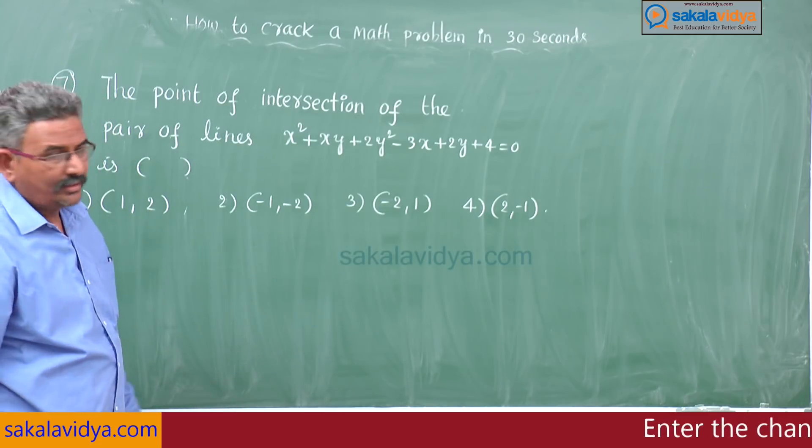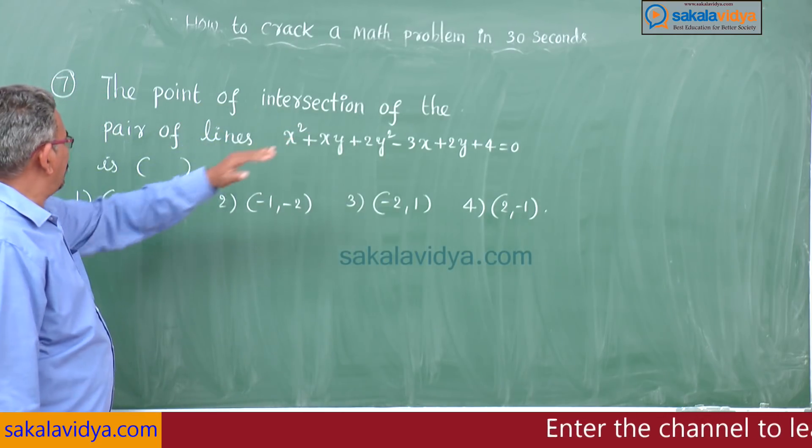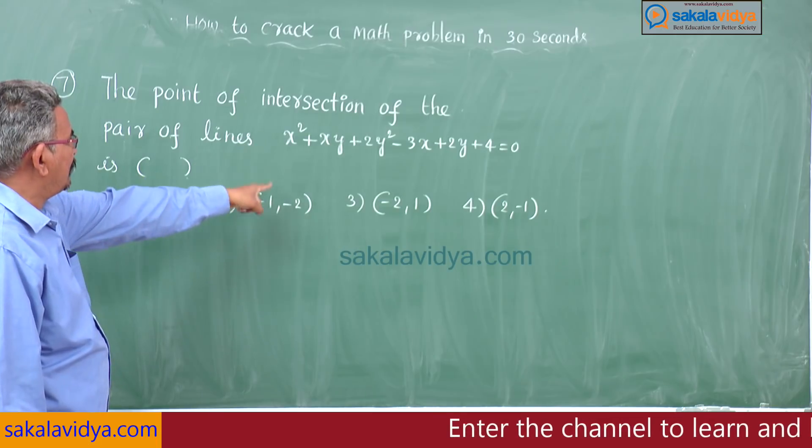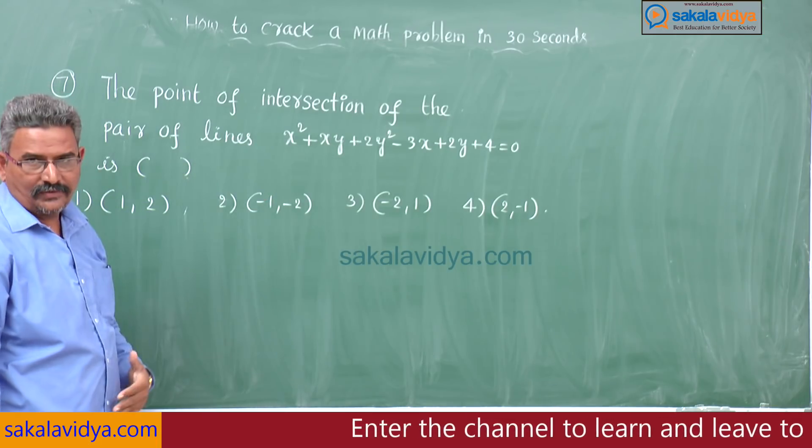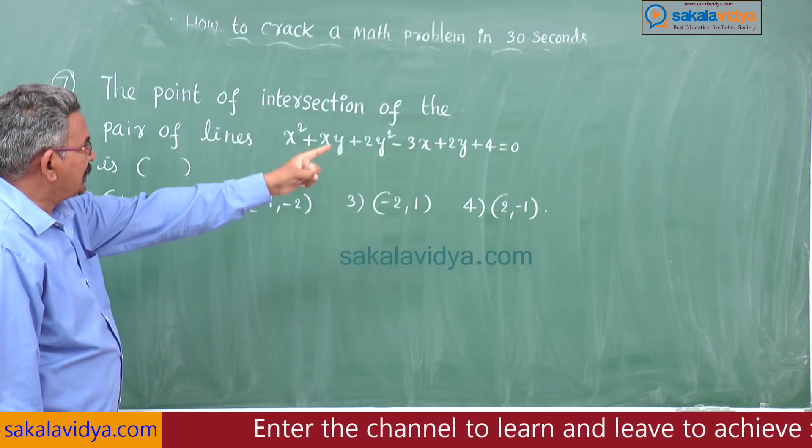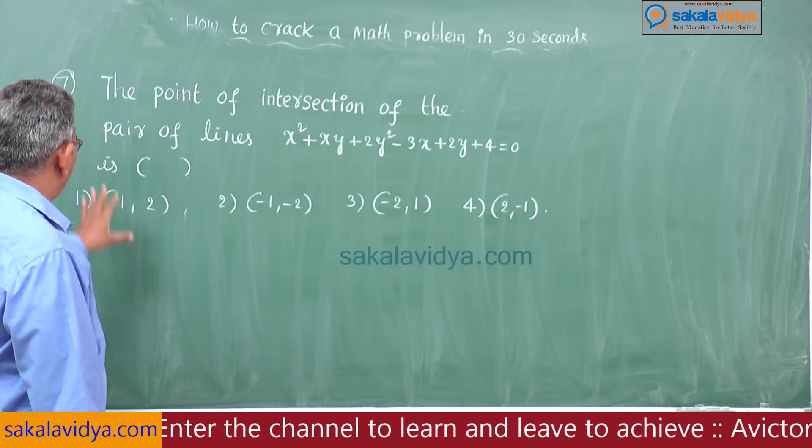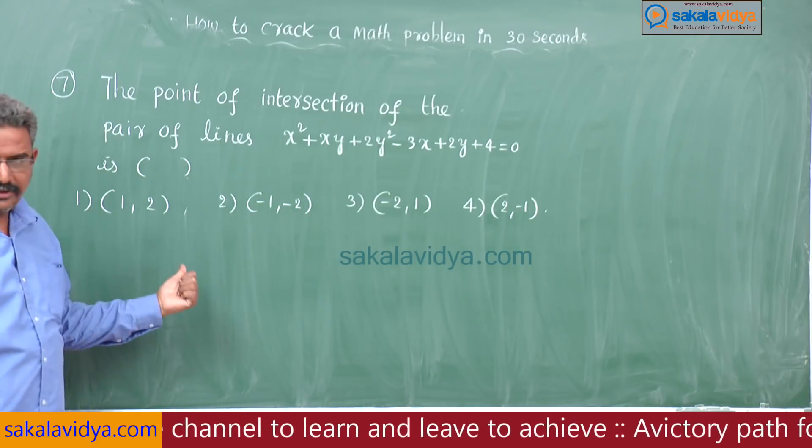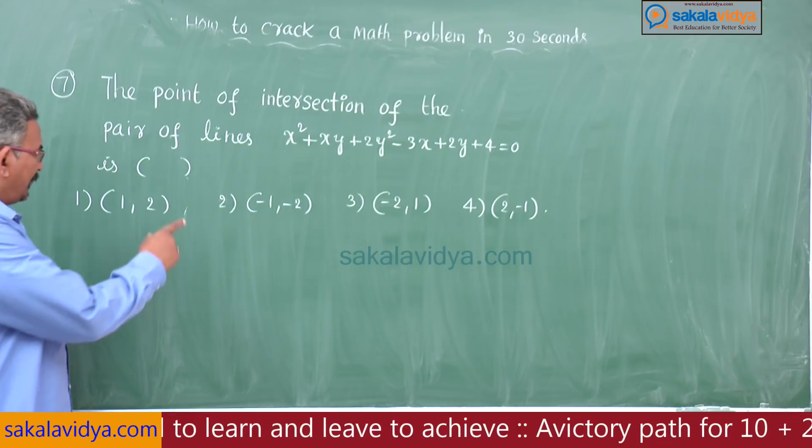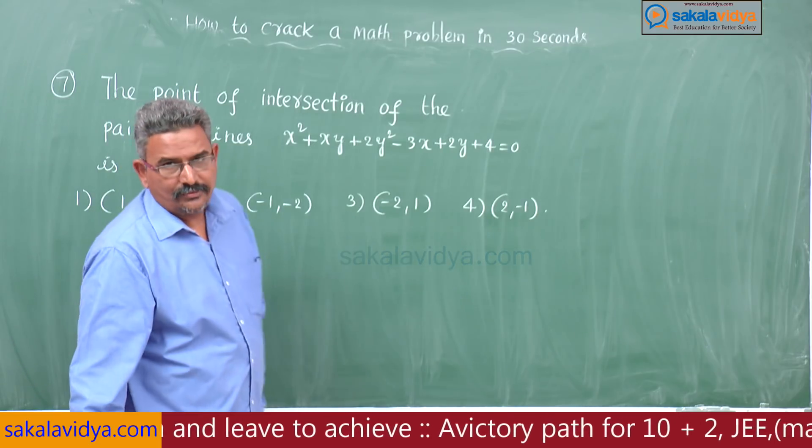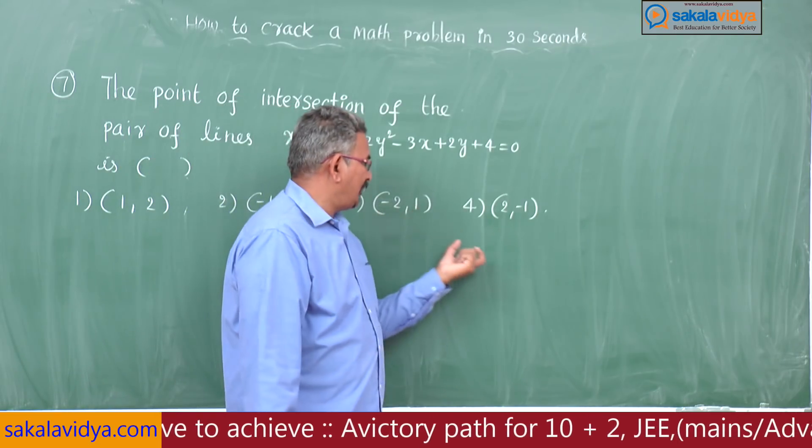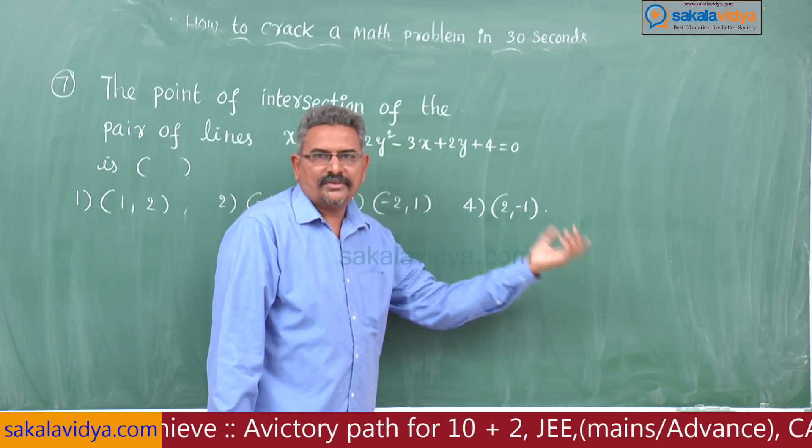Seventh problem: the point of intersection of the pair of lines x square plus xy plus 2y square minus 3x plus 2y plus 4 is equal to 0. First option 1 comma 2, second option minus 1 comma minus 2, third option minus 2 comma 1, fourth option is 2 comma minus 1.